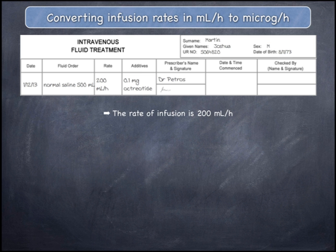The order displayed shows that a patient is ordered octreotide 0.1mg in 500mL of normal saline to infuse at 200mL/h. The case notes, which are not displayed on the screen, tell you that the patient's weight is 80kg.